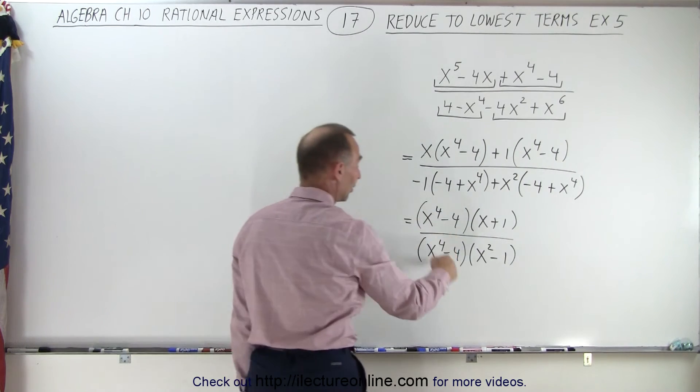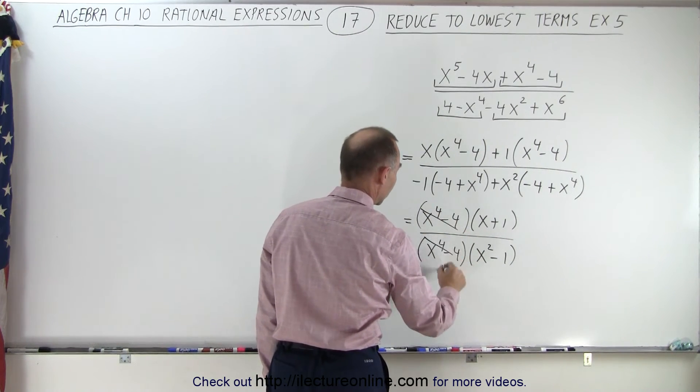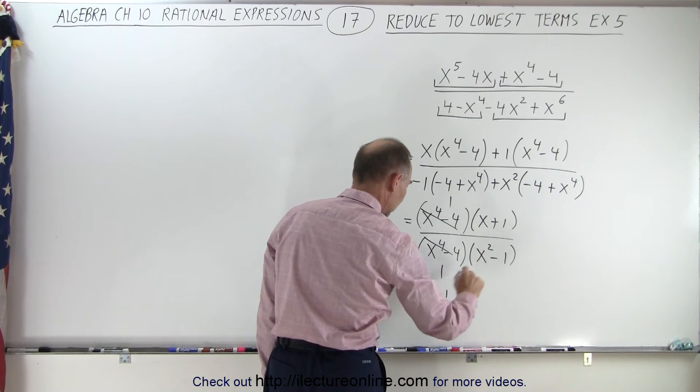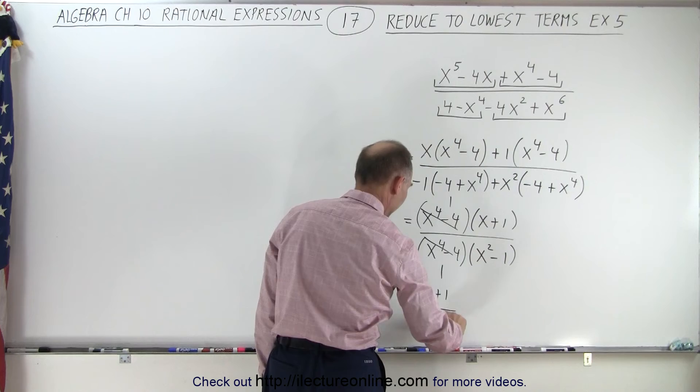So now I can see that these cancel out, and I'm left with x plus one in the numerator and x squared minus one in the denominator.